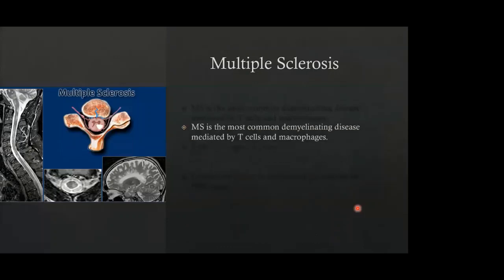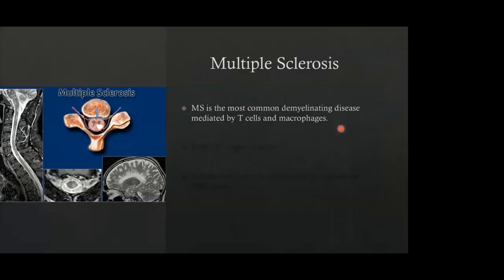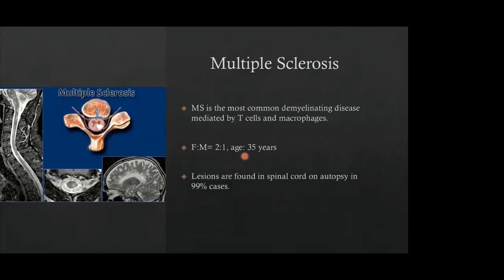MS is the most common demyelinating disease, especially in the west and in geographical areas further from the equator. It has a female preponderance with a ratio of 2:1. The peak age of onset is around 35 years. Lesions can be found in the spinal cord on autopsy in approximately 99% of MS cases. Brain lesions are typically oriented perpendicular to the ependymal surface and the callosal-septal interface, giving the characteristic Dawson fingers.